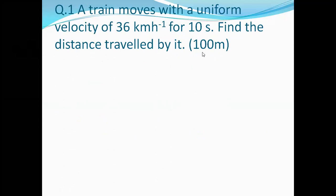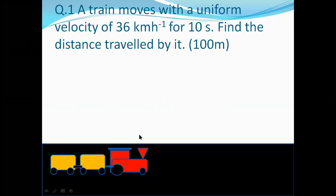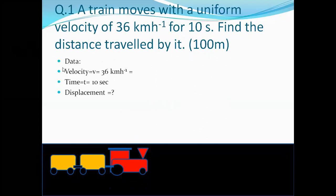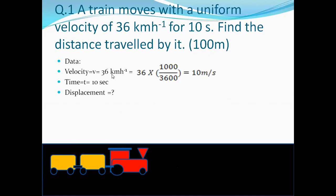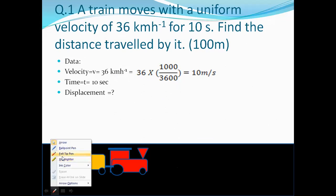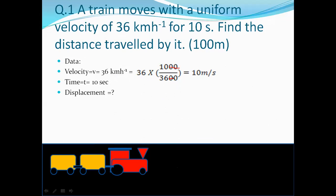The answer should be 100 meters. First, the given data: velocity is equal to 36 km per hour. We have to convert this kilometer per hour into meter per second, so we multiply by 1000 and divide by 3600. The two zeros cancel and 36 cancels with 36, giving us 10 meters per second.